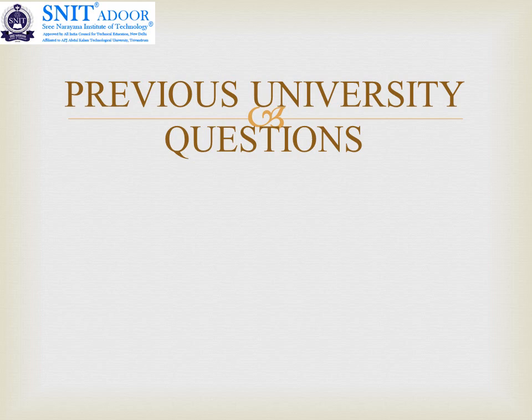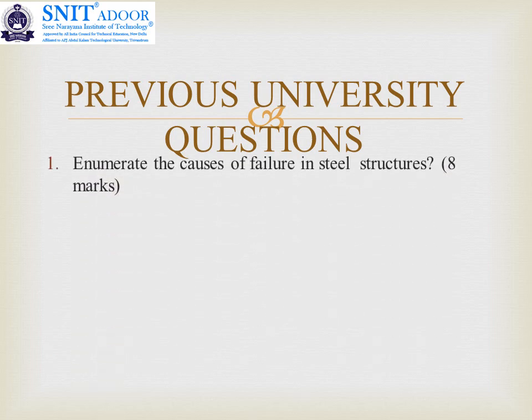In this session, we discussed what is meant by steel failure and the various causes of steel failures. Steel structures may fail due to faulty connection, compression, tension, flexural failure, fatigue, corrosion, fire and heat, or beam failure. The previous year university question asks to enumerate the causes of failure in steel structures for 8 marks — so you need to write any eight causes and enumerate them. You can write examples to get full credits. Thank you for listening to the session.